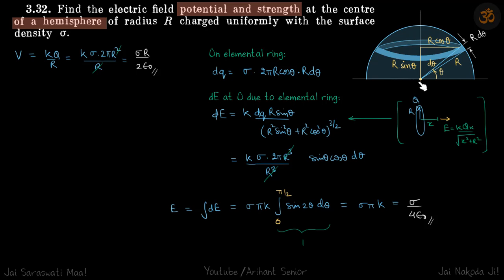Electric field is not that easy to find because the different charges will have electric field in different directions. Even though the distance is the same for all charges, direction is different, so we need to integrate to find the total electric field. We take a ring element.